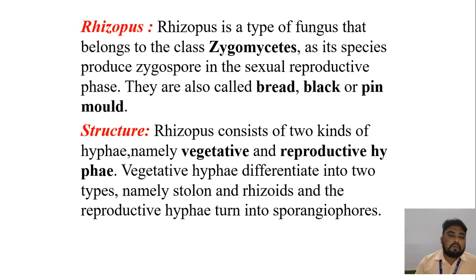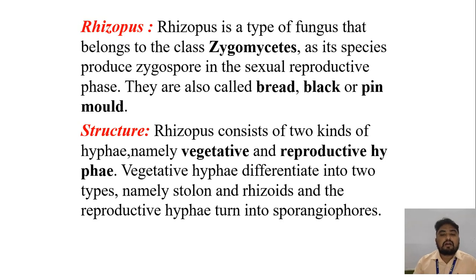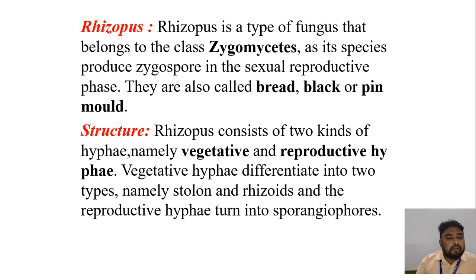The next topic is Rhizopus. Rhizopus is a type of fungus that belongs to the class Zygomycetes, as its species produce zygospores in the sexual reproductive phase. They are also called bread mold, black mold or pin mold. This is the Rhizopus structure.